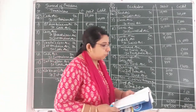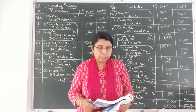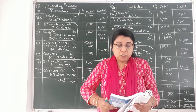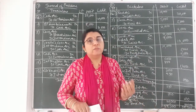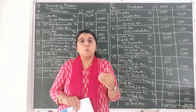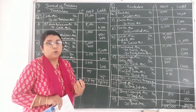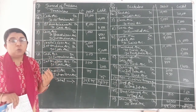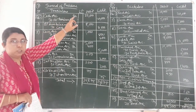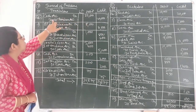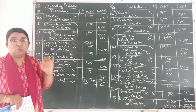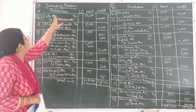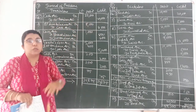Starting with the first entry, that is February 2014. Due to additional requirement of funds, 12% loan of Rs. 20,000 was borrowed from RAM. Due to loan borrowing, the cash would come into the business. As per the rule of real account, debit what comes in. So cash account has been debited. The journal entry is: cash account debit 20,000 to 12% RAM's loan account credit 20,000, because RAM is the giver of loan. As per the rule of personal account, credit the giver.